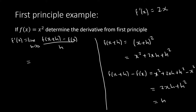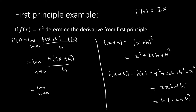Take out h as common factor from 2xh + h², giving h(2x + h). So f(x+h) minus f(x) over h becomes h(2x+h) over h. The h's cancel, leaving 2x + h. Now substitute h = 0 and we are left with 2x. Show all steps, and when you substitute don't forget to show this is now the derivative.